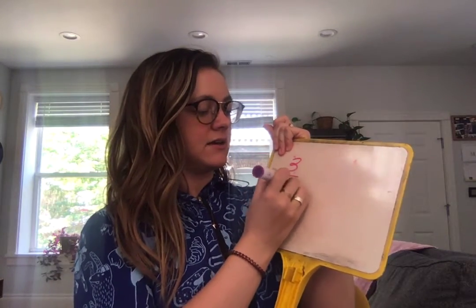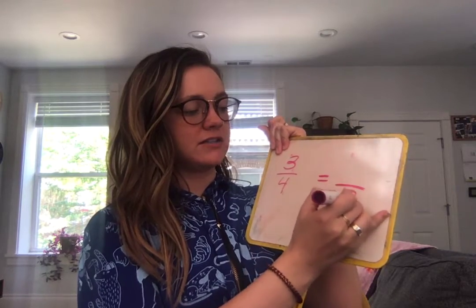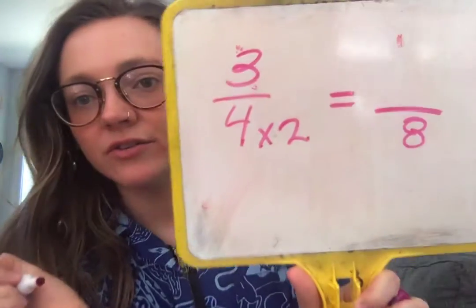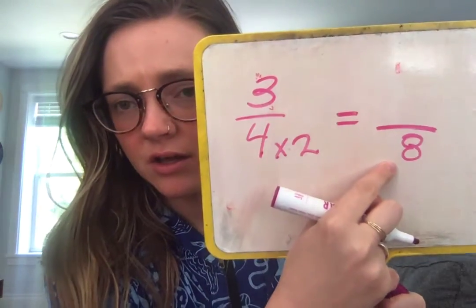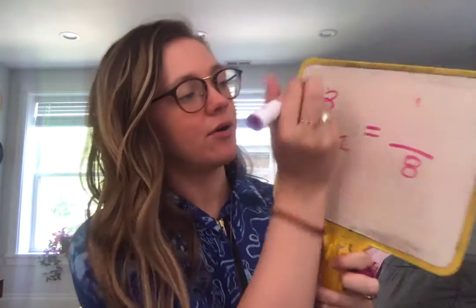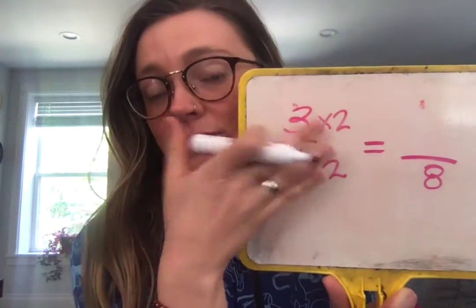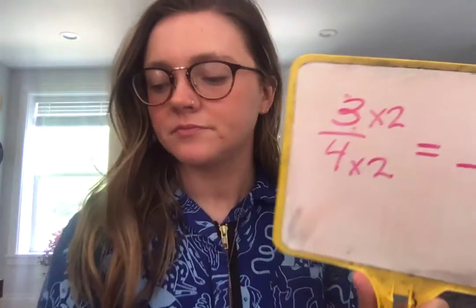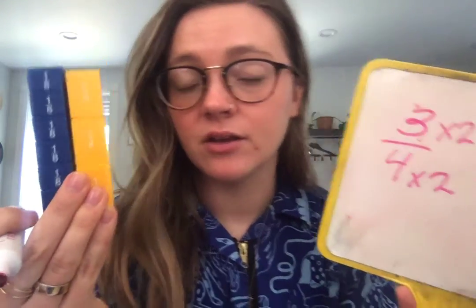The other way you could do this: to get from four to eight, what do I multiply? I multiply by two. So if I multiply the bottom by two, I need to multiply the top by two. Let me show you an example in writing. We needed three-fourths, but I wanted it to be with a denominator of eight. What did I need to do to the four to get to eight? Multiply by two — four times two equals eight. Whatever I do to the bottom, I also need to do to the top. So three times two is six. Six-eighths — and that's exactly what we got.